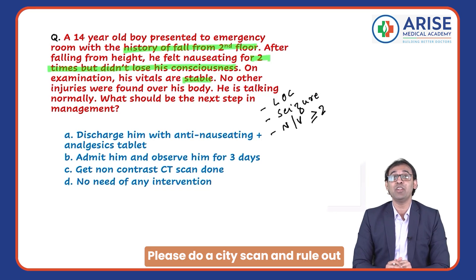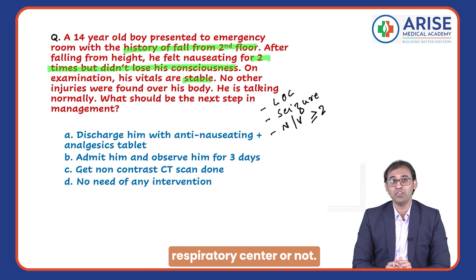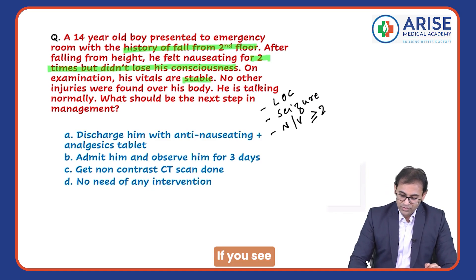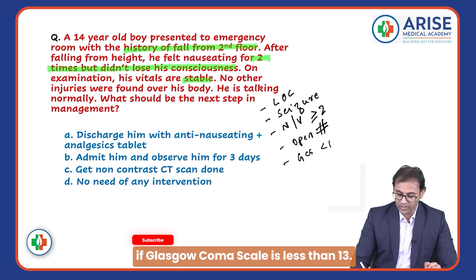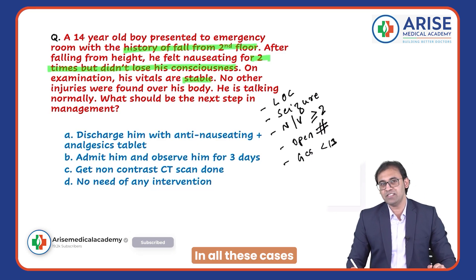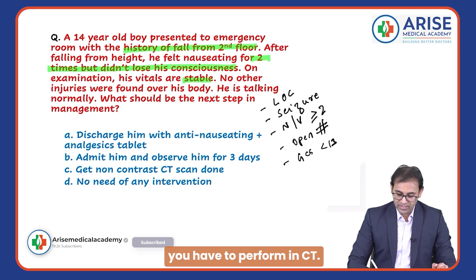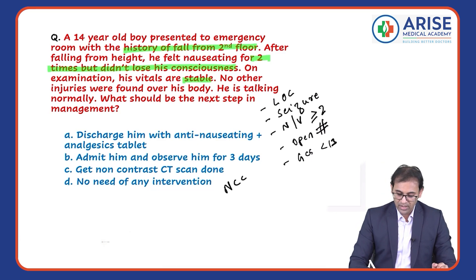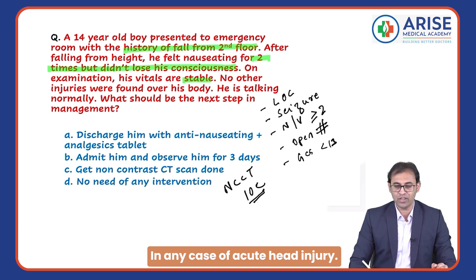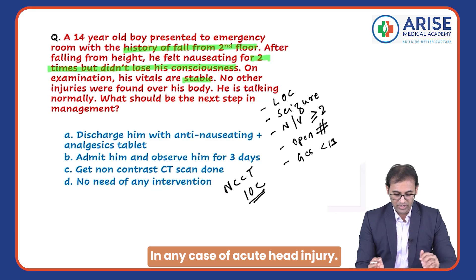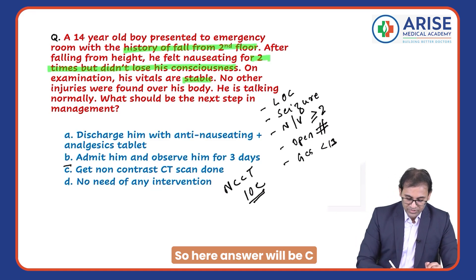Please do a CT scan and rule out if there is any danger to the respiratory center. If you see any open fracture, or if the Glasgow Coma Scale is less than 13, in all these cases you have to perform NCCT. Please remember: NCCT is the investigation of choice in any case of acute head injury. So the answer here will be C.